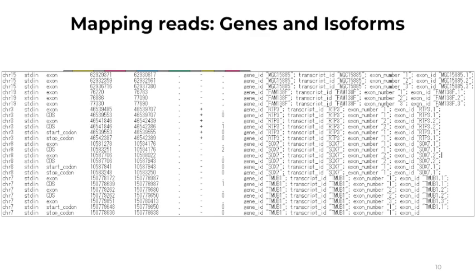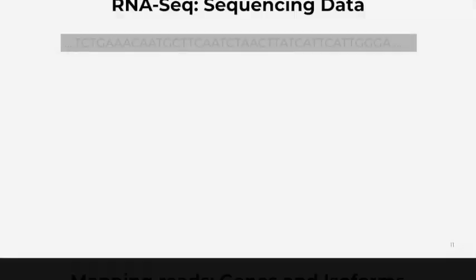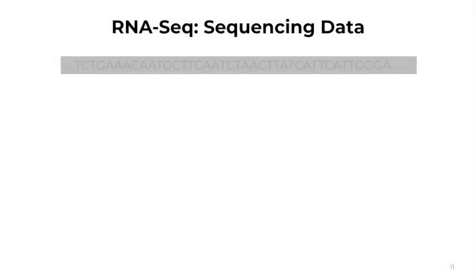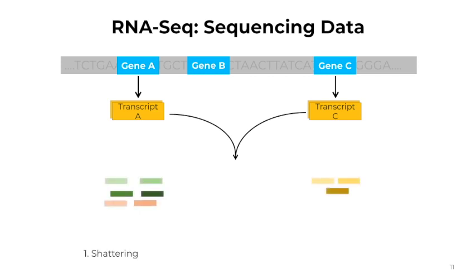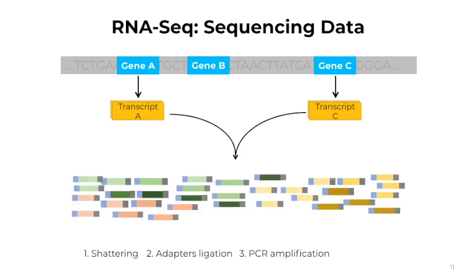To understand why other steps are needed in the RNA-seq analysis pipeline, let's look at the expression of genes and how data can be used to study this. This is the reference genome, where you have gene A, gene B, and gene C. Not everything is transcribed — for example, gene A and gene C are transcribed, but gene B is not. The product is RNA, which gets shattered into pieces of cDNA. There are adapters attached to the beginning and end of each fragment. This nucleotide information is amplified using PCR and is then read by the sequencer. And this is where our analysis steps start.